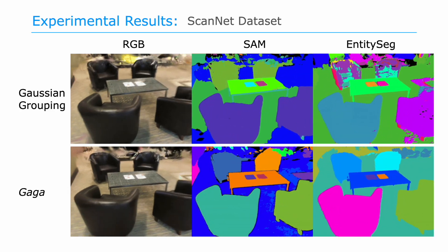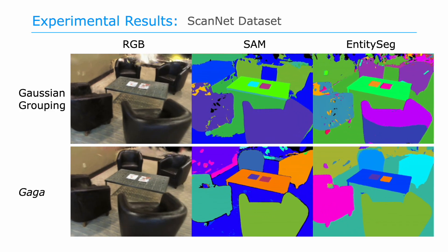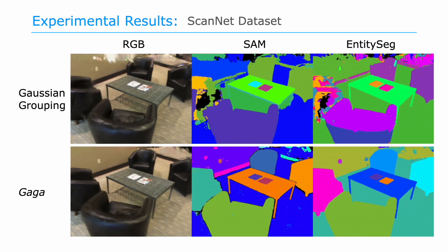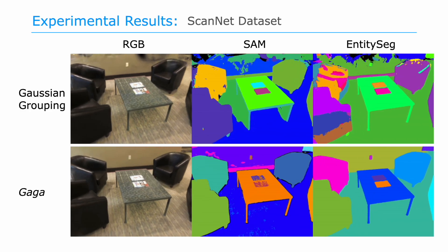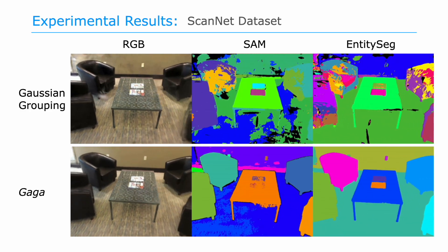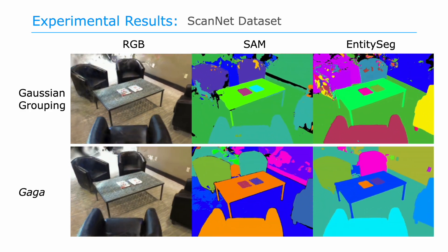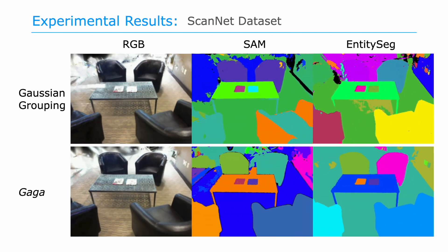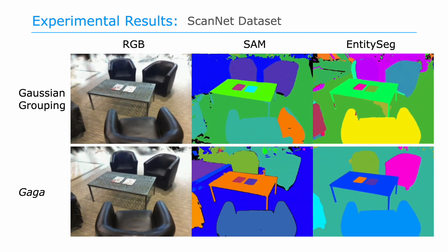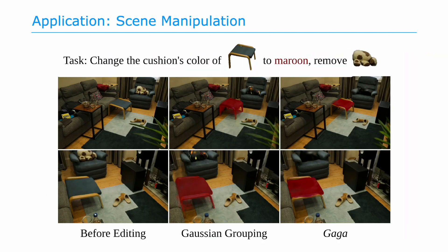Results on the ScanNet dataset: the previous method cannot distinguish similar objects in the scene, like the black leather sofas, while GAGA with 3D awareness can precisely locate and segment each one of them. We further demonstrate GAGA's ability to provide high-quality and multi-view consistent 3D segmentation on downstream application tasks, including scene manipulation.